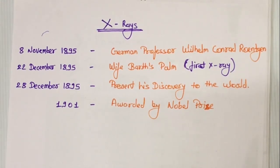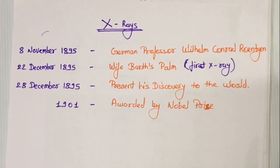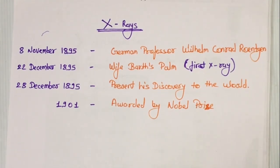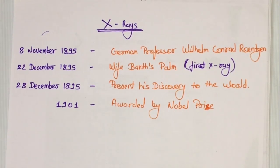On 8 November 1895, German professor Wilhelm Conrad Röntgen accidentally found during his experiment that crystals of barium platinocyanide placed near a cathode ray tube glow brightly, even though the tube was covered with a cardboard box. He concluded that some invisible radiations were coming from the tube, able to penetrate through cardboard — whereas cathode rays cannot. He further noticed these radiations travel in a straight line and are not deflected by an electromagnetic field. On 22 December 1895, he took the first ever human X-ray, of the palm of his wife Bertha.